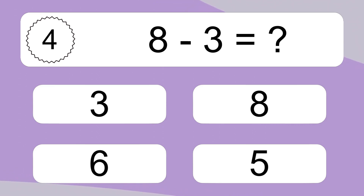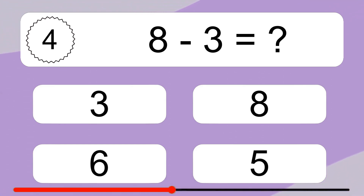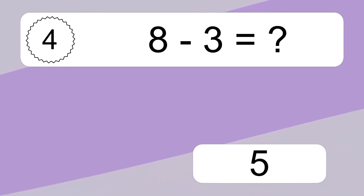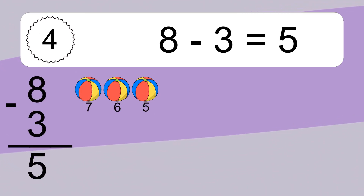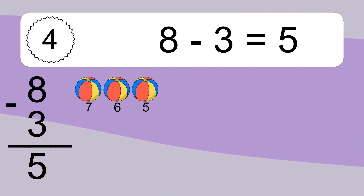8 minus 3 equals what? 8 minus 3 equals 5. Let's count it! 7, 6, 5.